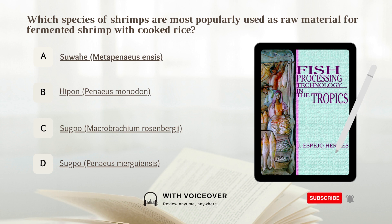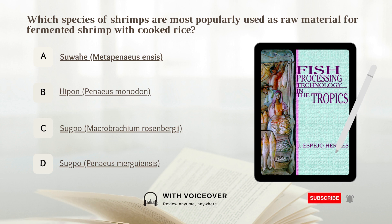Any small-sized shrimps can be used as raw material, but the most popular species are tagonton (Palaemon species) and suahe (Metapenaeus ensis).